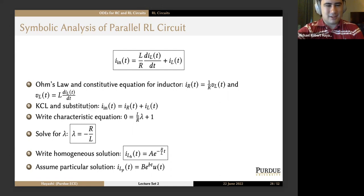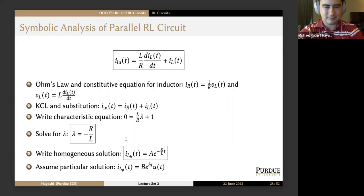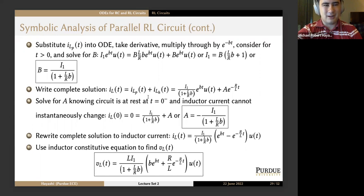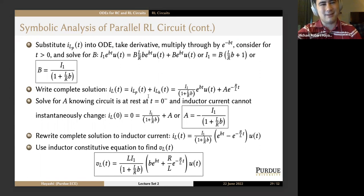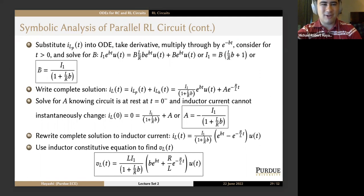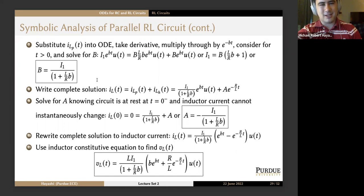The characteristic equation gives lambda equals negative R over L, or equivalently, the time constant tau equals L over R. We get the homogeneous solution, then a particular solution form matching the exponential forcing function. Since there are no t-multipliers needed, we substitute into the ODE and find coefficient B equals i_1 over (1 plus L/R times b). Units work out nicely at every step when using ODE methods.